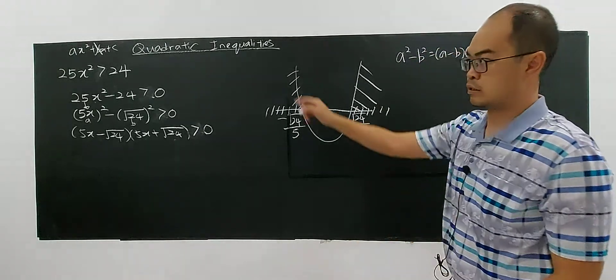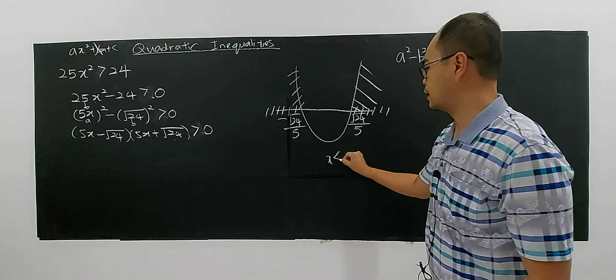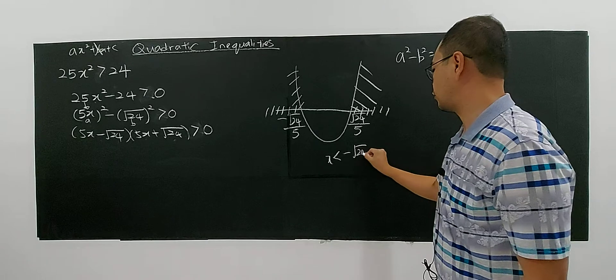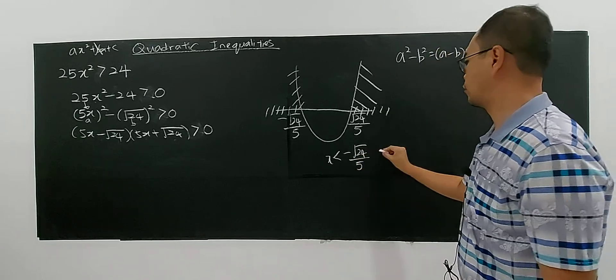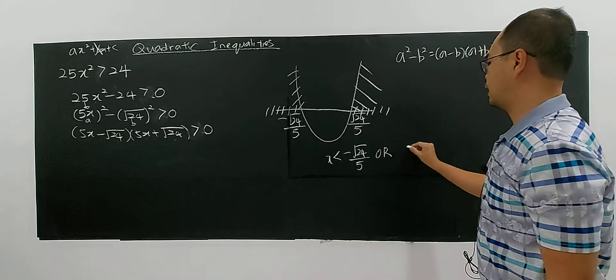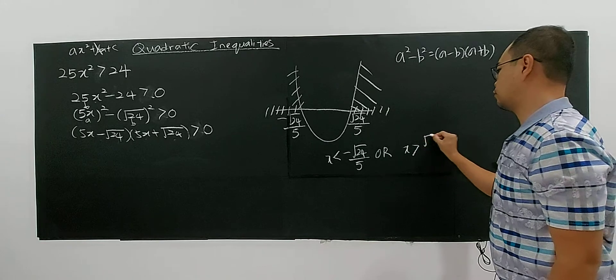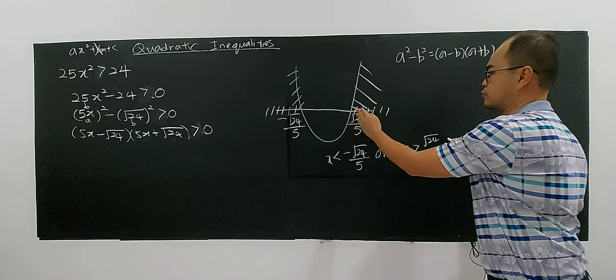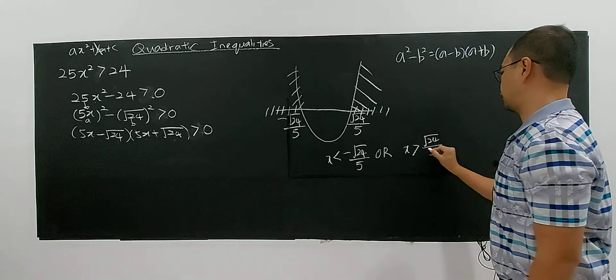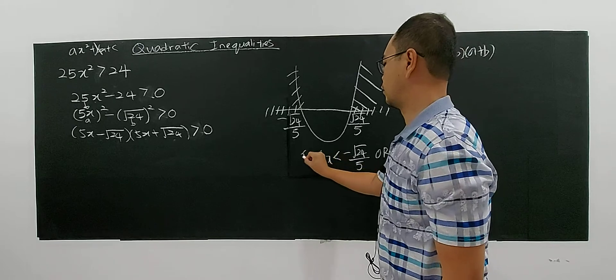So, for example, if I write greater than, so this will be the region. So how to write your answer? It will be x less than negative square root of 24 over 5. Either this region or this region. Or x greater than square root of 24 over 5. So this will be your answer for this question.